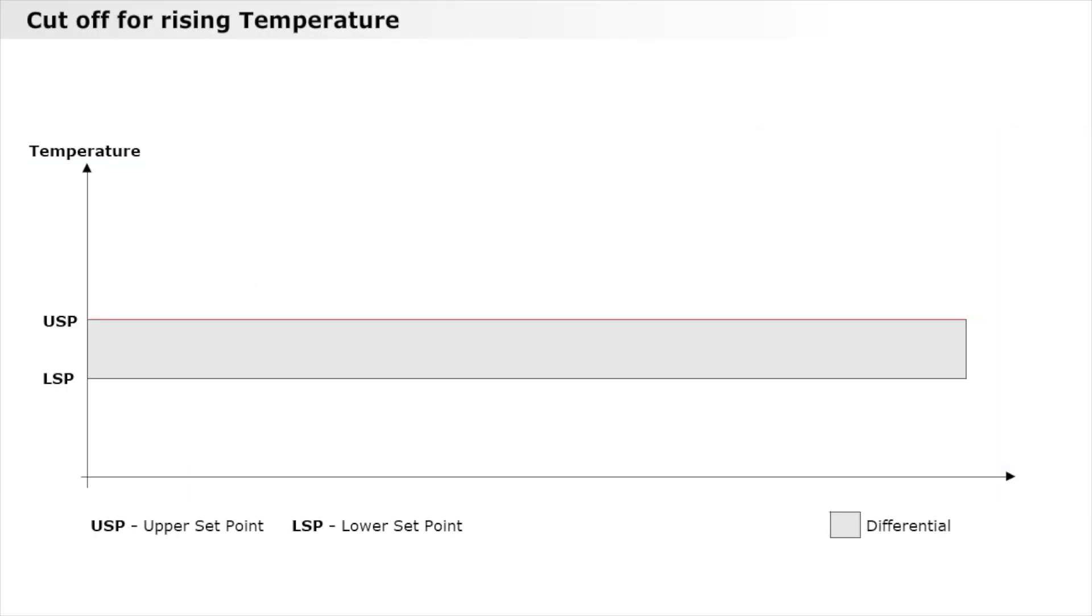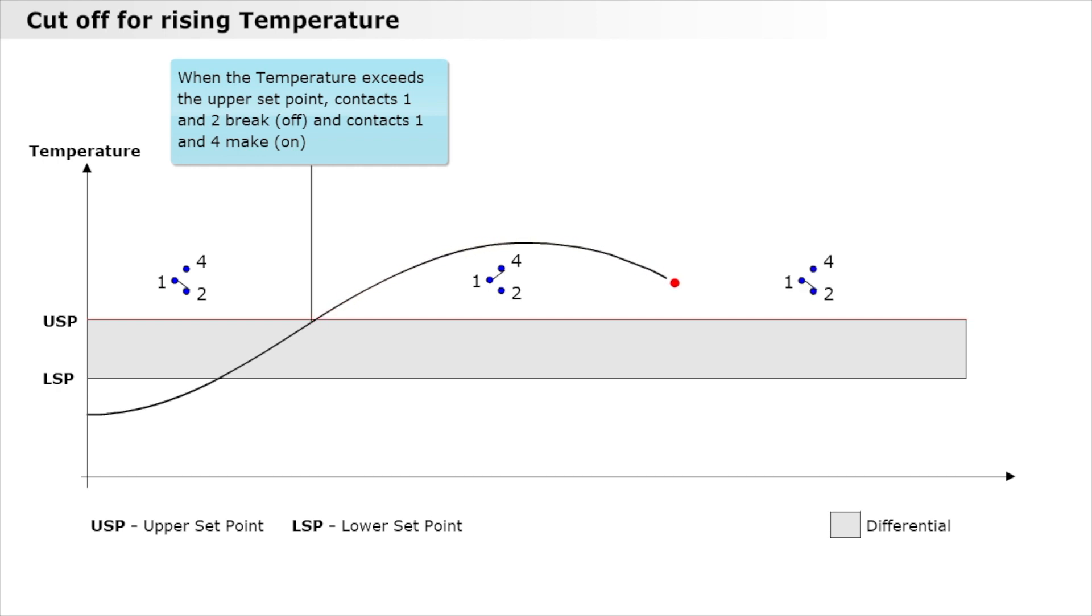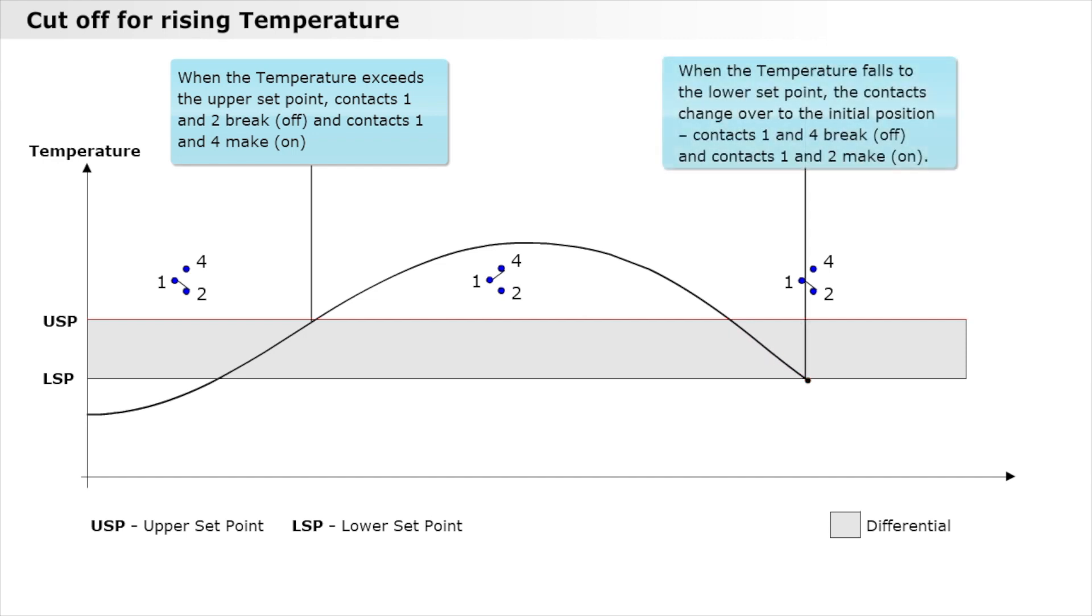Let's look at the cutoff for rising temperature. When the temperature exceeds the upper setpoint, contacts 1 and 2 break, and contacts 1 and 4 come together. When the temperature falls to the lower setpoint, the contacts change over to the original position. Contacts 1 and 4 break, and contacts 1 and 2 come together.